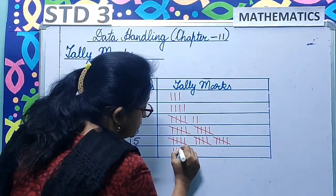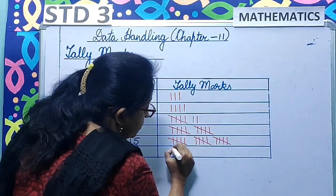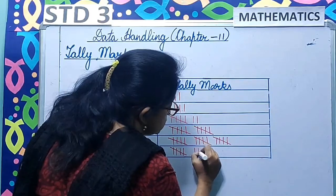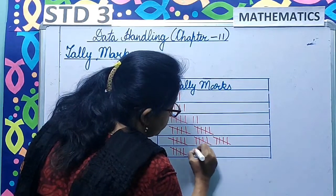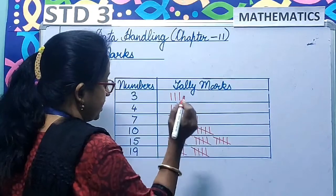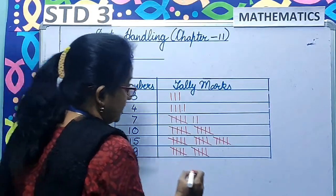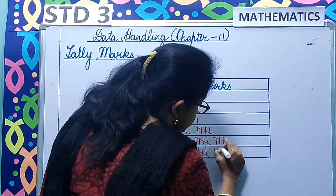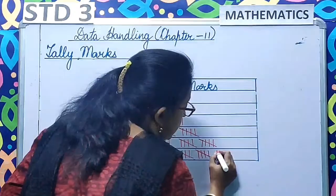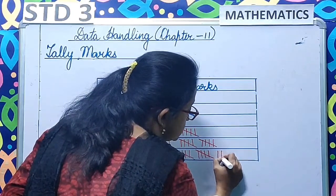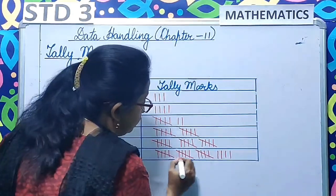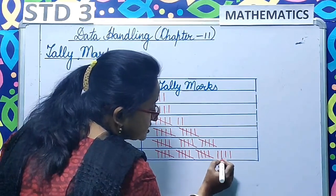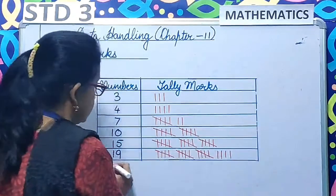Your next number is 19. So 1, 2, 3, 4, and 5 — group of 5. Then 1, 2, 3, 4, 5 — another group of 5. So 5 plus 5 is 10, now 9 left. So again 1, 2, 3, 4, 5 — group of 5. Then 1, 2, 3, 4. So 5 plus 5 is 10, plus 5 is 15, plus 1, 2, 3, 4 makes it 19.